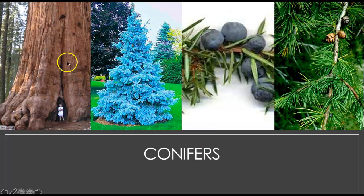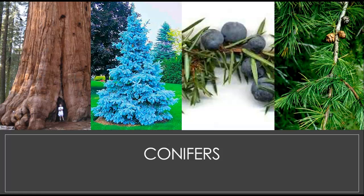Here are the conifers. Here's a sequoia — one of the largest trees ever, found only in one small area on the west coast, and they are endangered. Here is a blue spruce tree, a yew, and here is tamarack, the deciduous conifer.